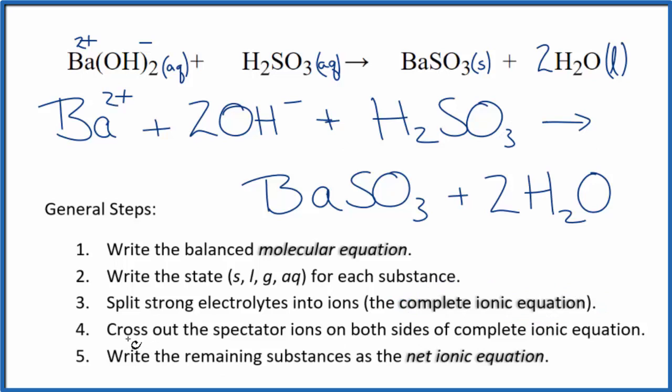Now we can cross out spectator ions. They're on both sides. So they would be the same thing on both sides. Here are our reactants and our products. Everything is unique. So this complete ionic equation, it's just the same thing as the net ionic equation. So this is the complete and net ionic equation for BaOH2 plus H2SO3.